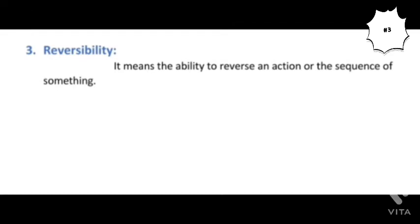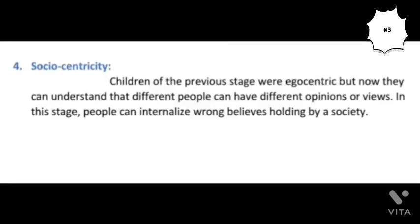The third characteristic developed by children in this stage is reversibility. Reversibility means the ability to reverse an action or the sequence of something. In the previous stage, children were unable to reverse actions — for instance, when they locked a door from the inside, they could not unlock it. But children in the concrete operational stage can unlock that locked door.